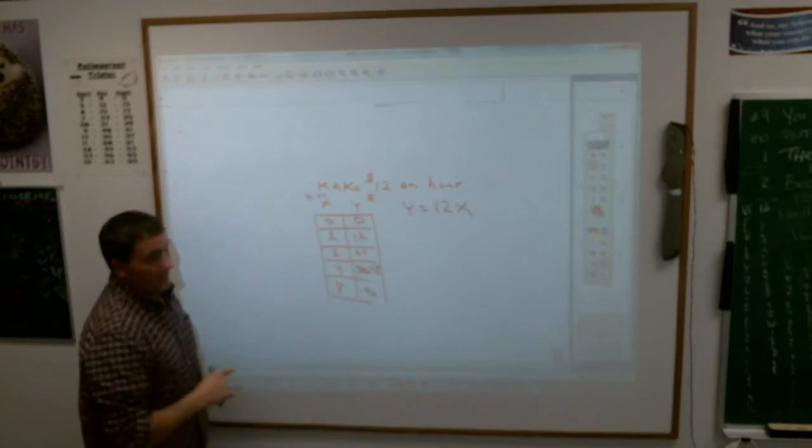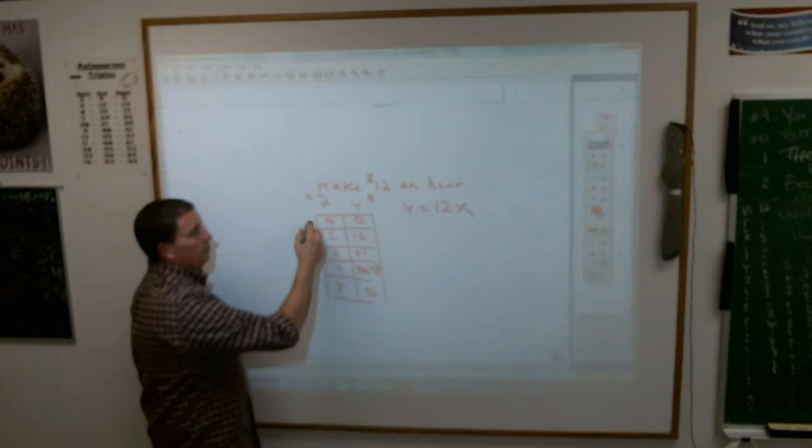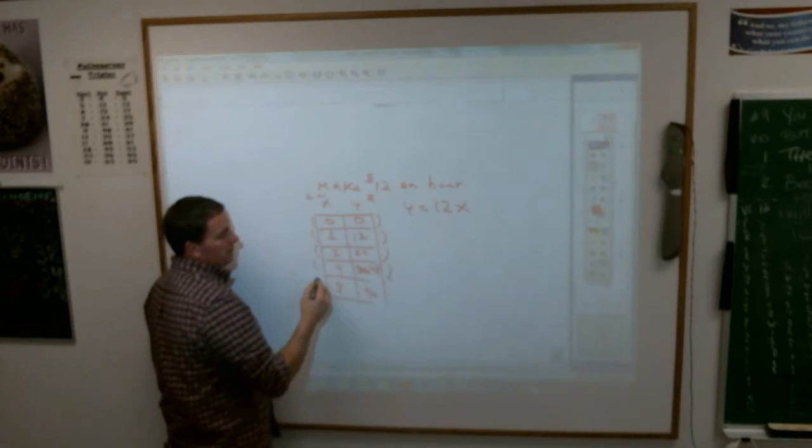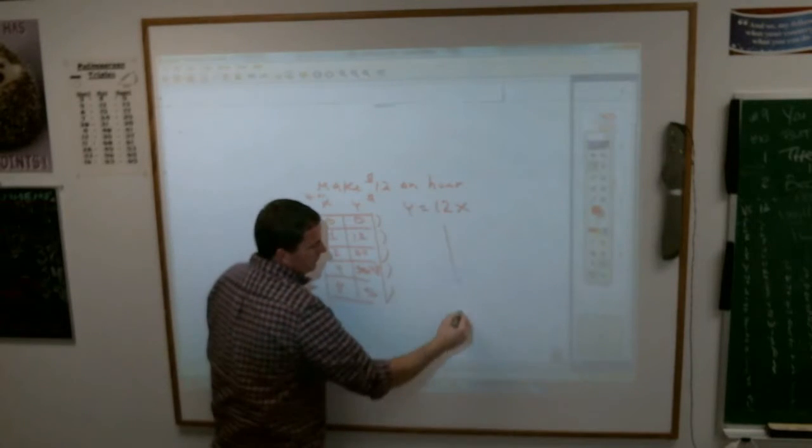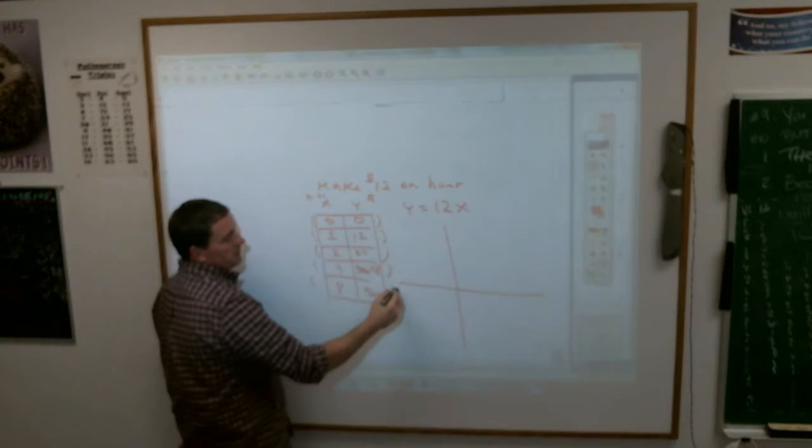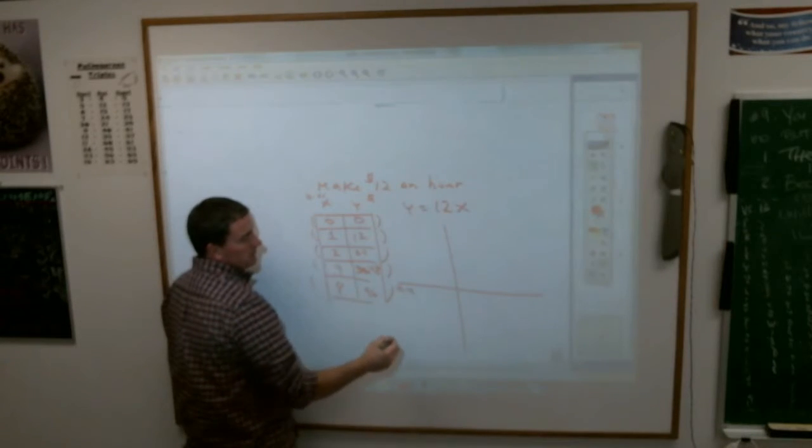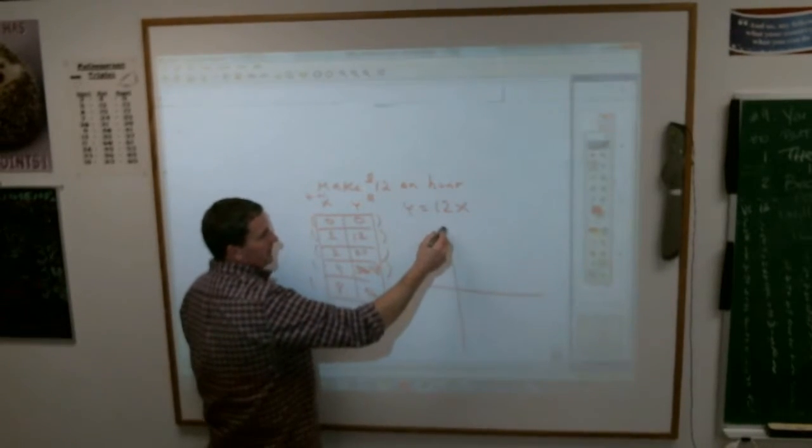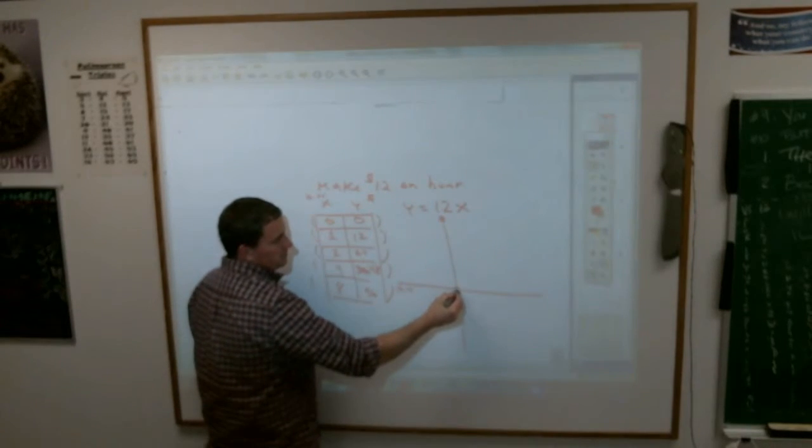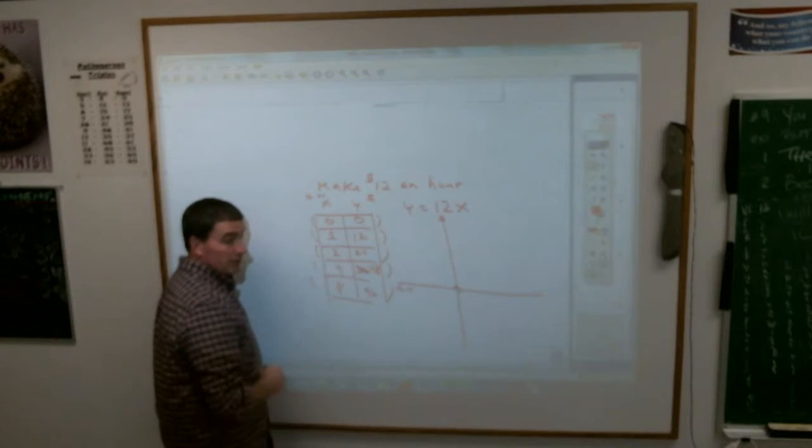If I were taking this and making points out of this, coordinate points, what would that look like if I were graphing this whole thing? Where this line here is the number of hours I work, and this line here, the Y line, is how much money I make. In zero hours, I make zero dollars, so it goes right there, correct?